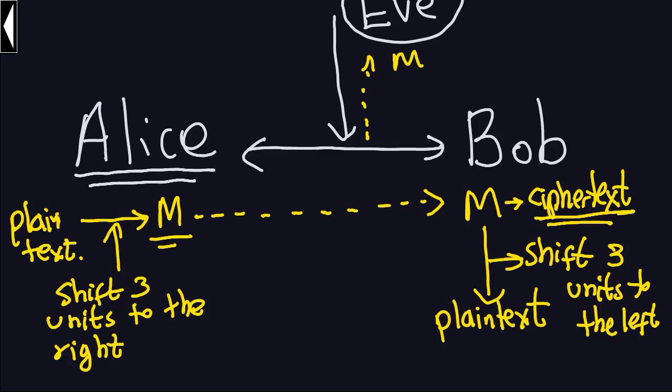Only Alice and Bob know how to do this, because we're assuming they already agreed on the shift cipher. Every time someone sends a message, that person shifts 3 units to the right to get the cipher text M, which is sent to Bob. Bob gets the cipher text, doesn't understand it — that's the point — and then shifts 3 units to the left to get the plain text. I'm going to show you how to do that in the next video, working backwards from cipher text to plain text.